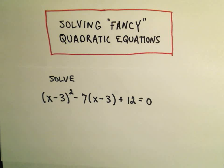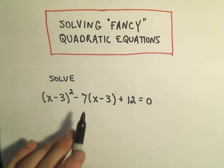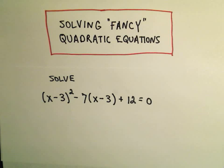So in the first problem here we have x minus 3 quantity squared minus 7 times the quantity x minus 3 plus 12 equals 0.